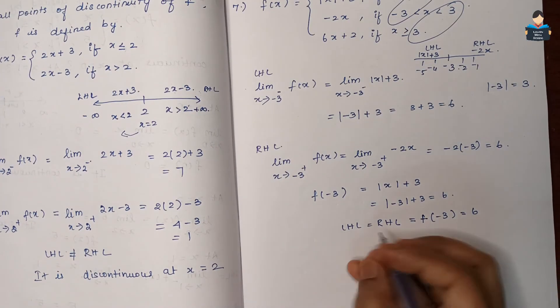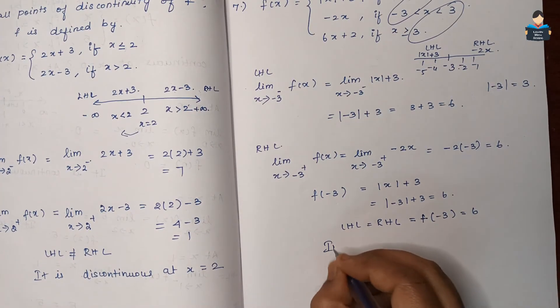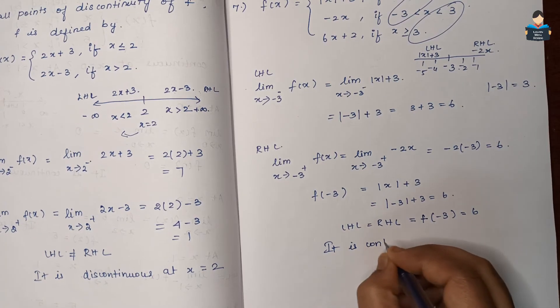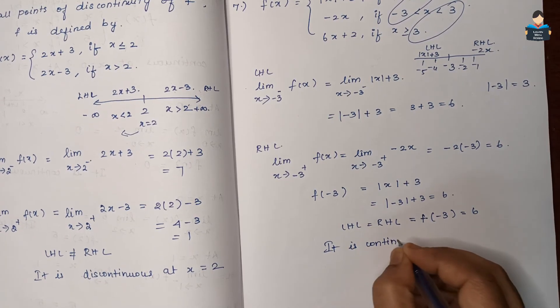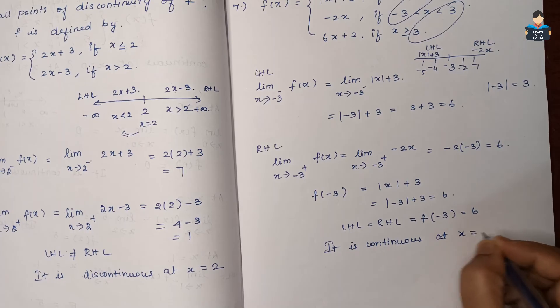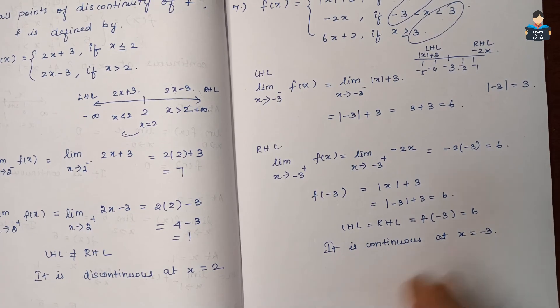So the function is continuous at x = −3.